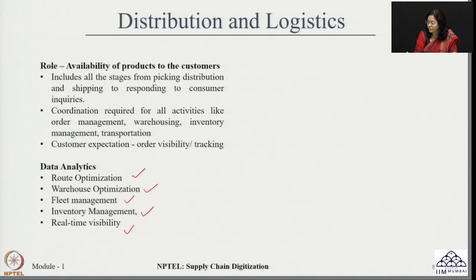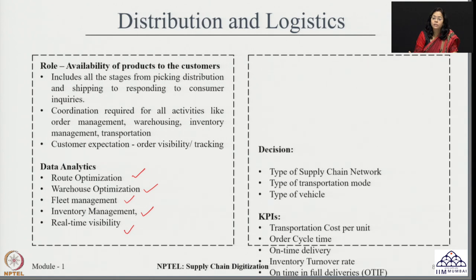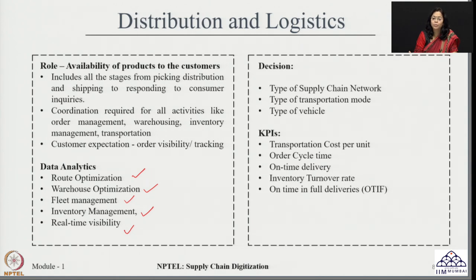Warehouse optimization ensures that space utilization is optimized, including product placement and picking processes. Fleet optimization covers decisions related to vehicle routing, fuel consumption, planning maintenance schedules, and reducing operational costs. Data analytics is playing a very critical role in planning all these activities in distribution and logistics. Decisions that can be made through digitization include the type of supply chain network suitable for requirements and the type of transportation mode, down to specific vehicle decisions.